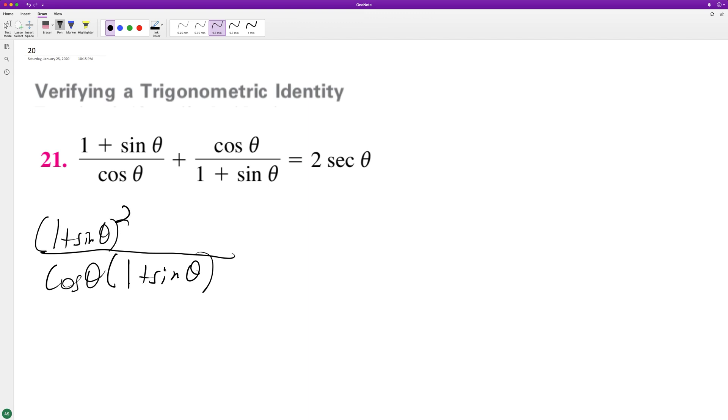squared times cosine theta, and cosine theta plus cosine squared theta. The common denominator is cosine theta times 1 plus sine theta. So then what we're gonna do here is foil this out.